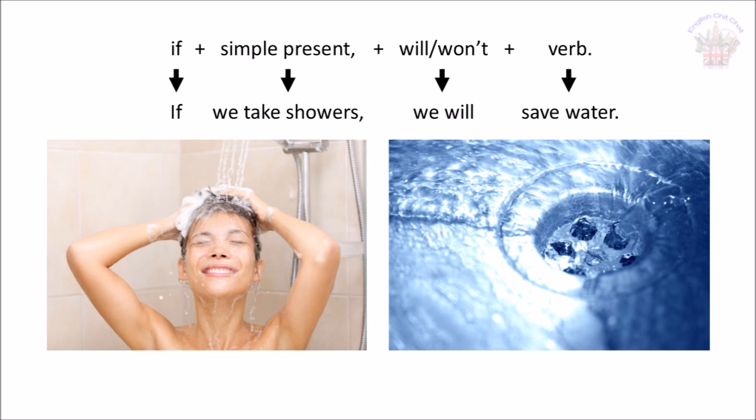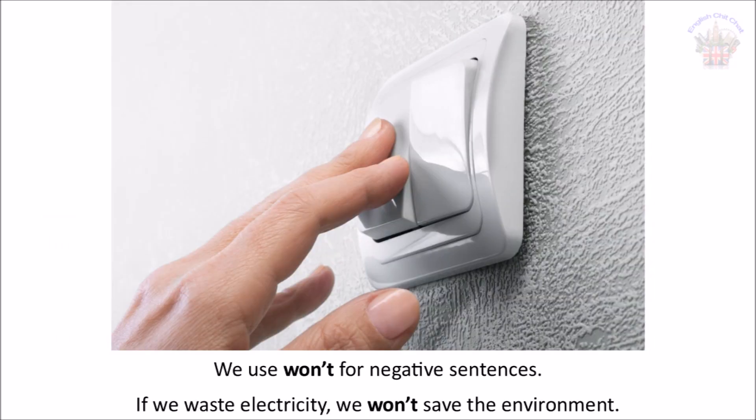To make first conditional sentences, we use 'if' plus simple present, then 'will' or 'won't' plus verb. For example: 'If we take showers, we will save water.' We use 'won't' for negative sentences, for example: 'If we waste electricity, we won't save the environment.'